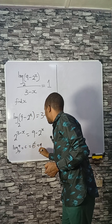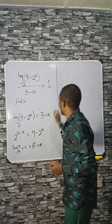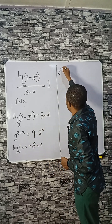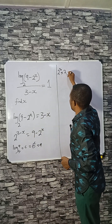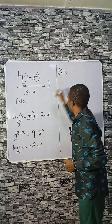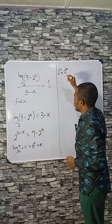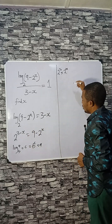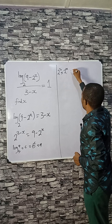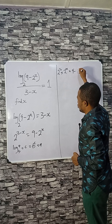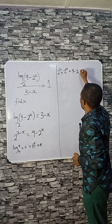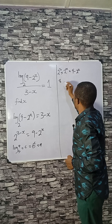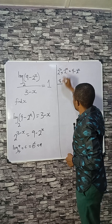From here you have 2 cubed times 2 raised to power minus x equals 9 minus 2 raised to power x. To remove the minus sign, this will be 8 divided by 2^x.